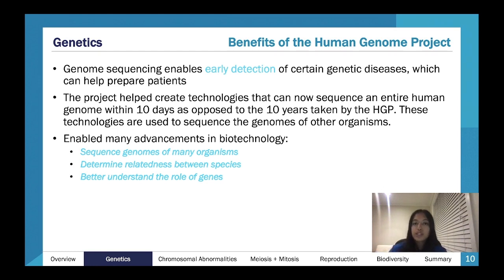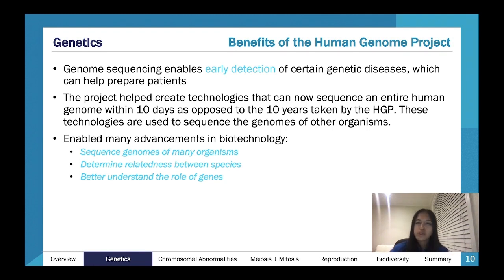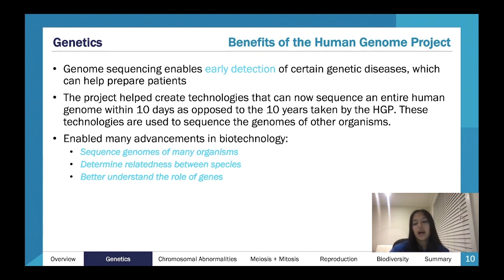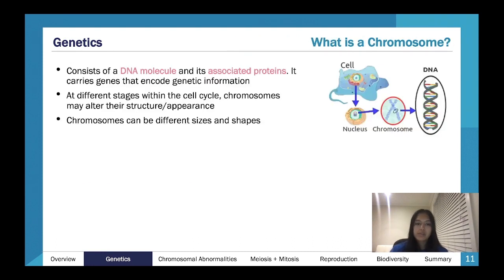The genome is your genes. Something equivalent for proteins is your proteome — the collection of all proteins you express. The Human Genome Project was very helpful, particularly for understanding genetic diseases, what genes code for what proteins, and how genes interact. Benefits include sequencing genomes of other organisms, determining relatedness between species — which you look at in year 12 — and understanding the role of genes in disease.